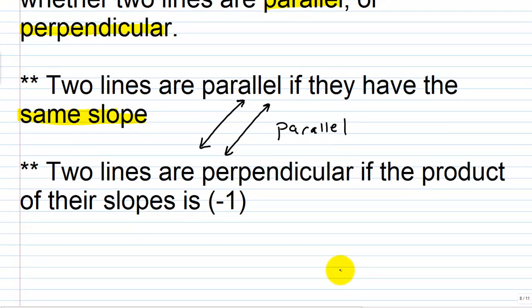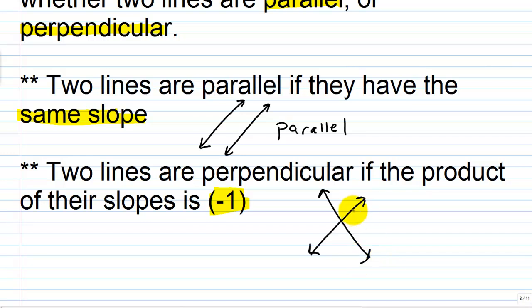Two lines are perpendicular if the product of their slopes is negative one. Perpendicular lines are going to intersect at a 90-degree angle. So if you graphed the lines, they would look something like this — it should form a 90-degree angle. Again, two lines are perpendicular if the product of their slopes is negative one.